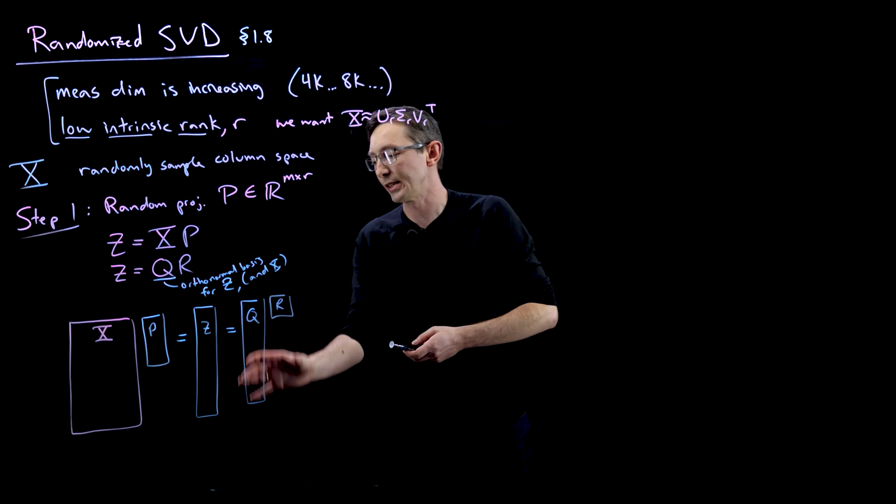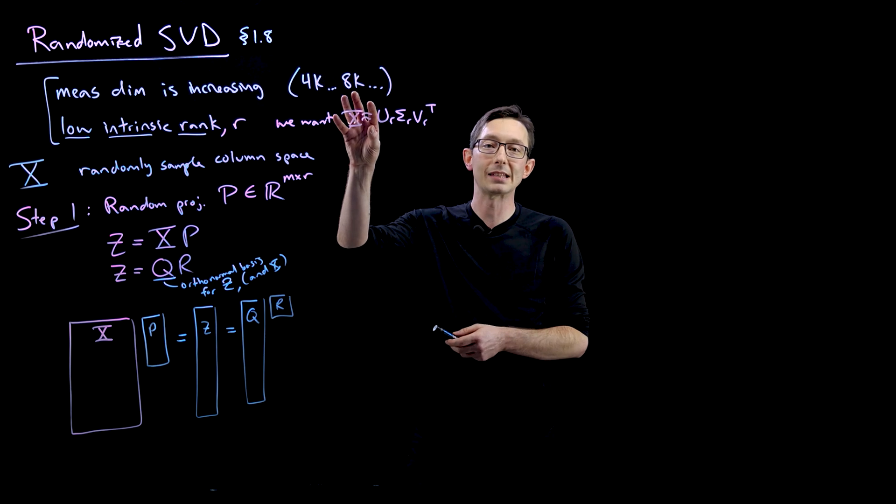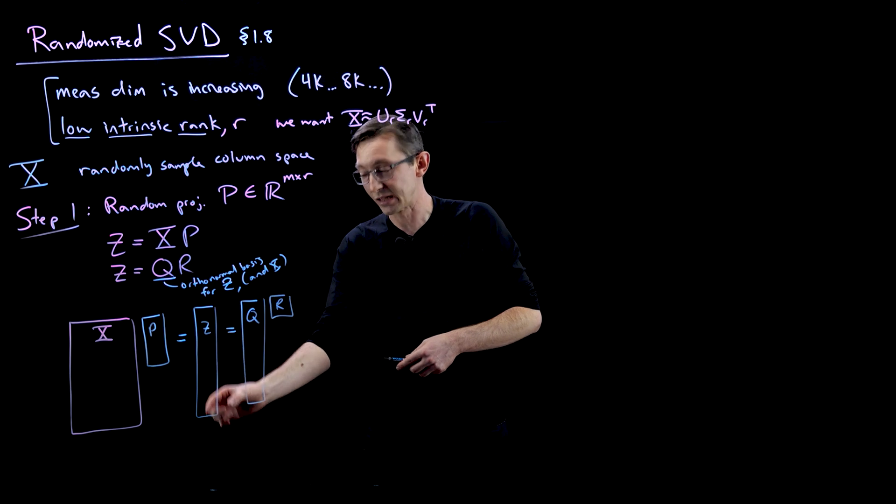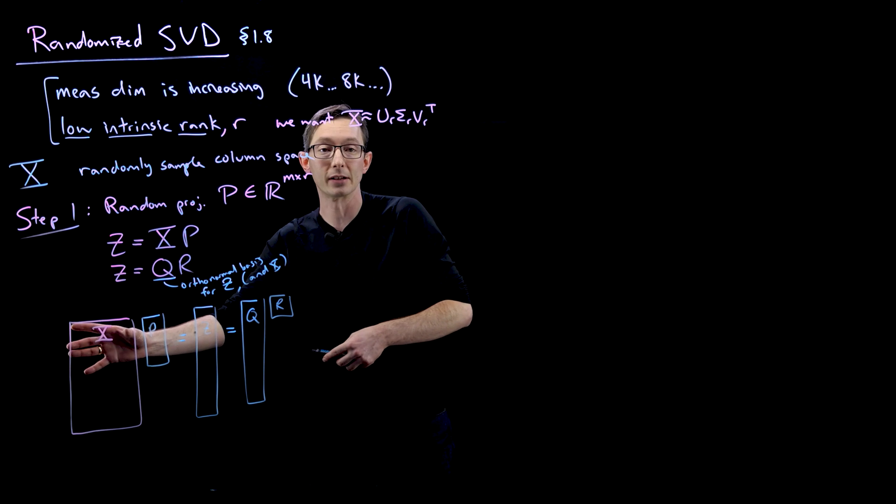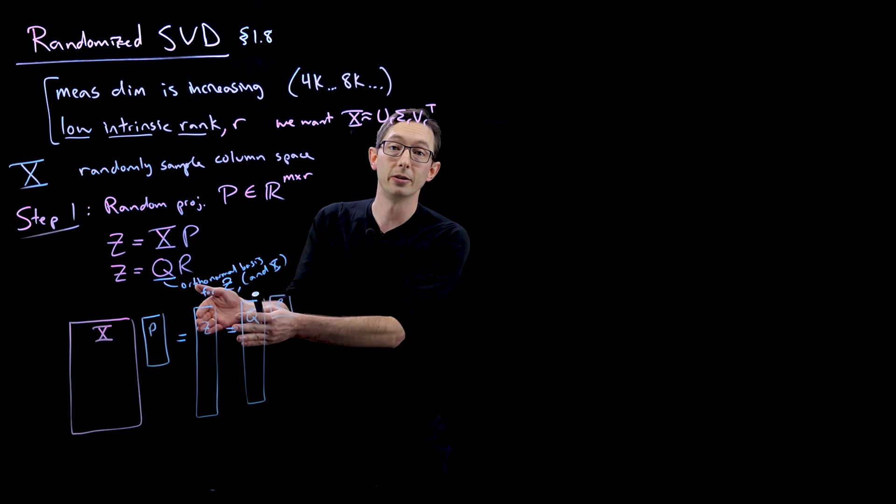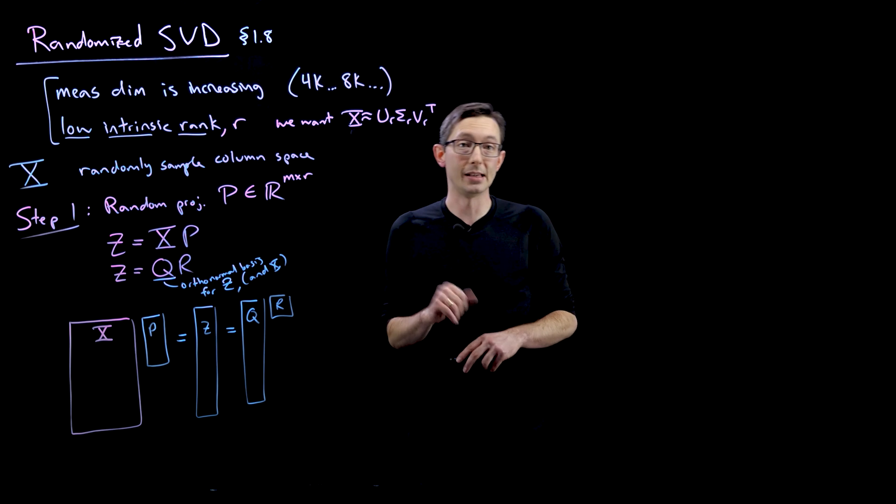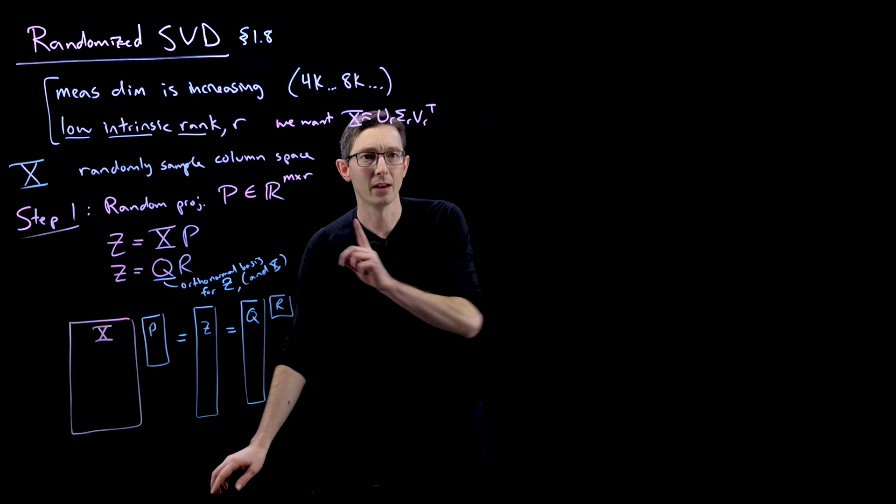And again, the QR factorization is what we normally use to compute the SVD in the first place. But here we're applying it to a skinny small matrix Z instead of a big matrix X. So it's a lot faster to do it on Z than on X. And it still captures most of the same information. Good. That's step one.